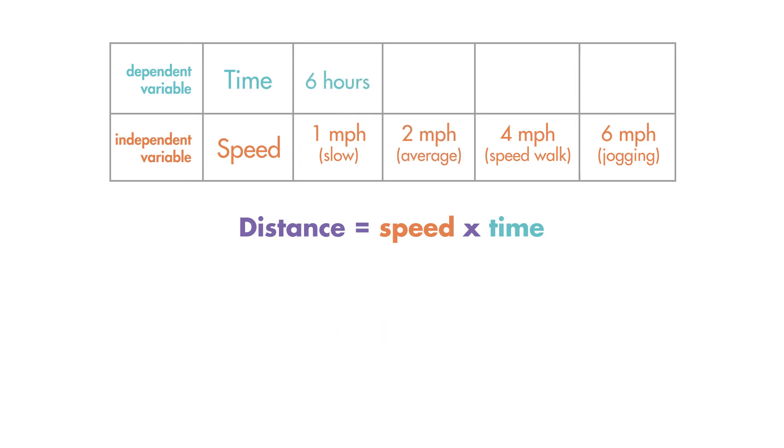At 2 miles per hour, our equation is 6 is equal to 2 times t. Divide both sides by 2 to solve for t. At 2 miles per hour, the hike will take 3 hours.